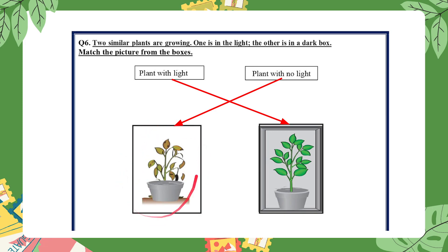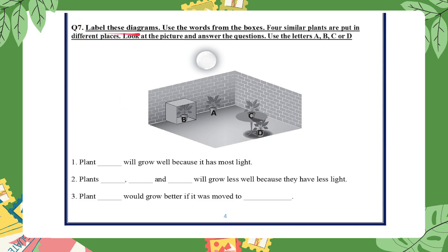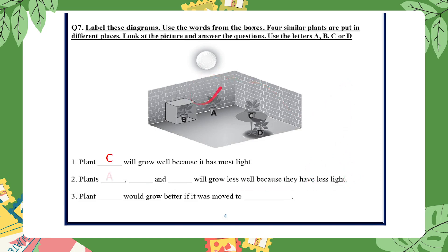In question seven, you can say that plants need the right conditions to be healthy. Label these diagrams using the words from the boxes. Four similar plants are put in different places. Plant B is placed in a box, plant A is near the wall, plant C is on the table, and plant D is under the table. Which plant will grow well because it has most light? It is plant C, because it is on the table and has most light. Plants A, B, and D will grow less well because they are placed where they have less light.